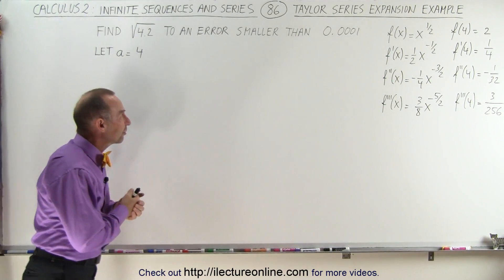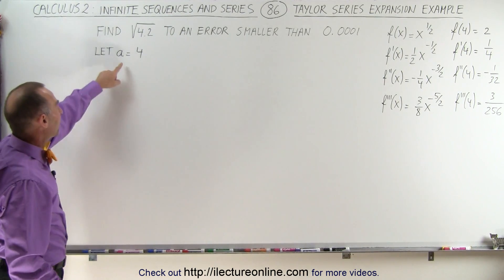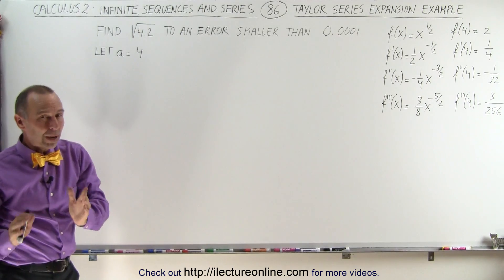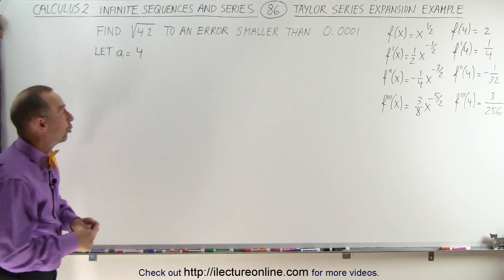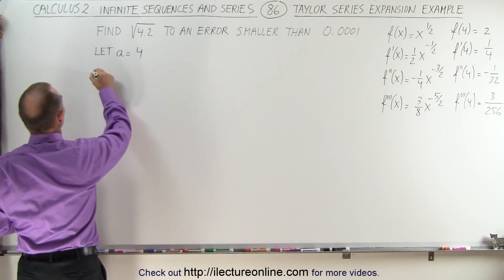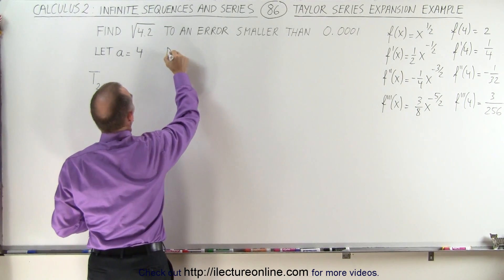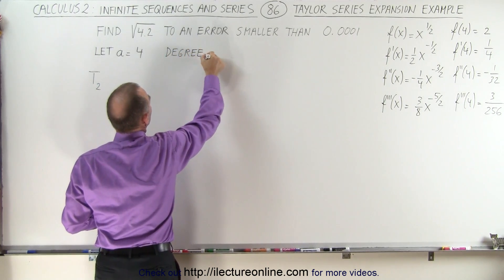Now, the Taylor series expansion will require a certain number of terms. Since we picked a value for a very close to the value we're trying to evaluate, we probably won't need very many terms. I'm hoping to be able to get by with just two terms. So we can say that the Taylor series expansion to the second degree, we're going to try degree equals 2.